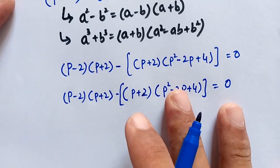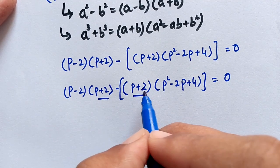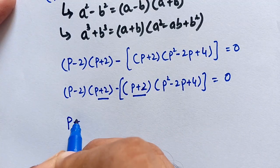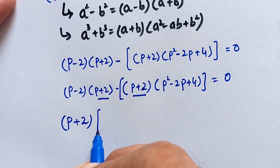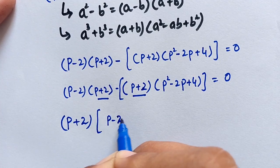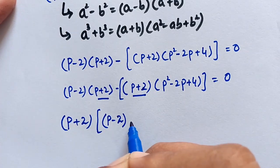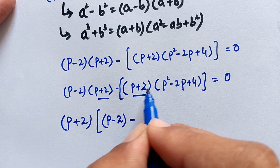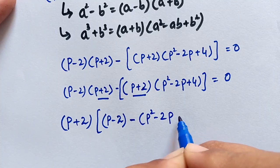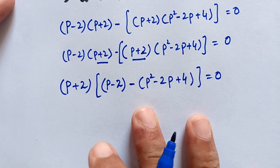Now to solve this interesting question, we take the common factor p plus 2. Here, p plus 2 appears in both terms, so we factor out p plus 2. Dividing each term by p plus 2 leaves p minus 2 from the first term, and p squared minus 2p plus 4 from the second term, which is equal to 0.